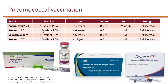Pneumovax-23 is a PPSV. The rest are PCV, or polysaccharide conjugate vaccines. The first is Prevnar-13, a 13-valent vaccine approved for ages six weeks and older. All PCVs are available as pre-filled syringes and can only be given as intramuscular injections. Most recently, VaxNuvance (PCV15) and Prevnar-20 (PCV20) were approved, both initially for ages 18 and older.